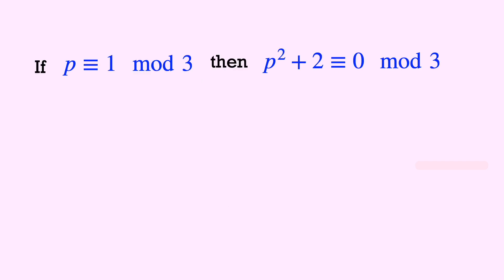Suppose p is congruent to 1 mod 3. Then, squaring it and adding 2 would give us a number once again divisible by 3. That is, it's congruent to 0 mod 3. So that would give us that p squared plus 2 can't be a prime.